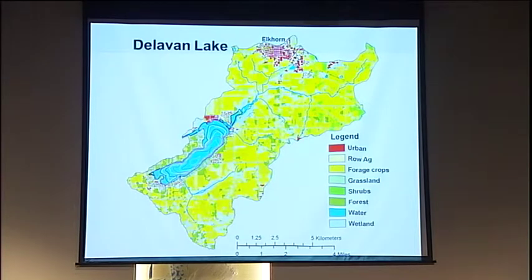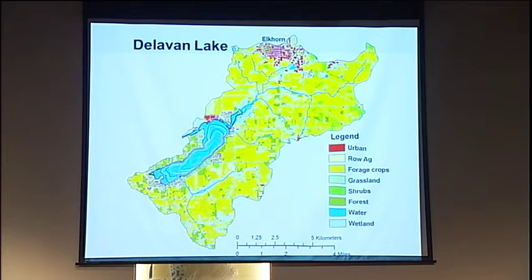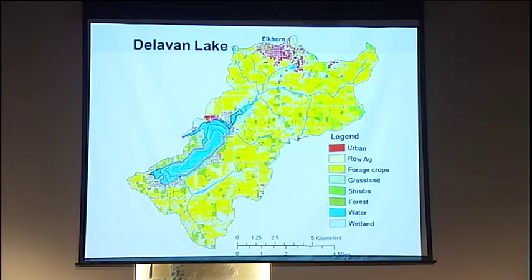Through time, this is the watershed of Delavan Lake — yellow is agriculture and red is urban areas, and it's probably pretty typical of a lot of lakes around here. What happened is that through time, we've got a lot of nutrients coming in from all these agricultural fields and the city of Elkhorn up here. Originally the sewage treatment plant there was dumping its effluent right into the stream, and you could see it would come down into the lake.